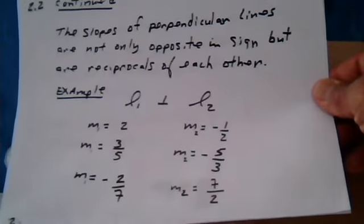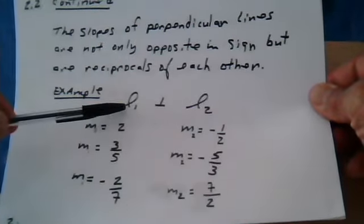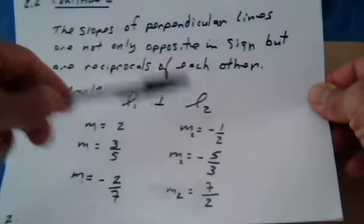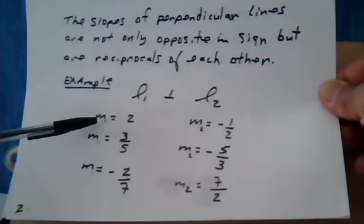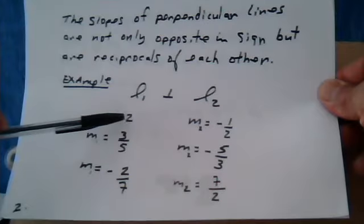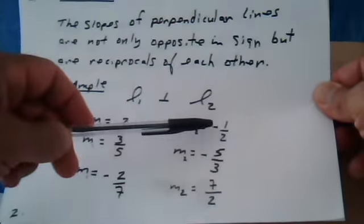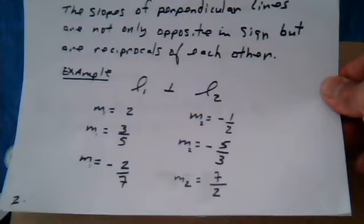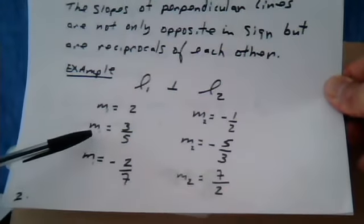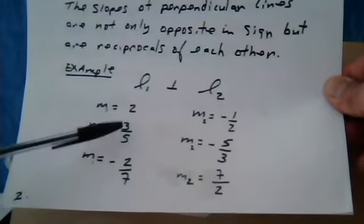Here's an example. Suppose these were the slopes of line 1 and these were the slopes of line 2. So if the slope of line 1 was equal to 2, then the slope of line 2 would be negative 1 half. If the slope of line 1 was 3 fifths, the slope of line 2 would be negative 5 over 3.